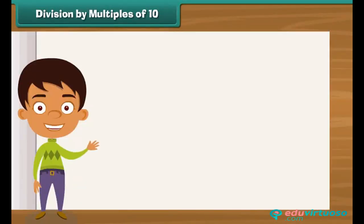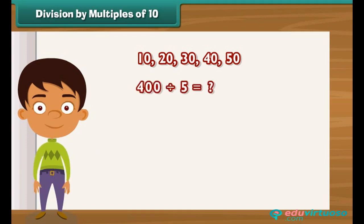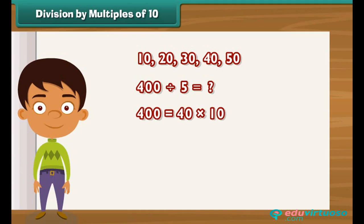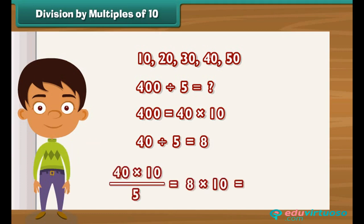Division by multiples of 10. The numbers that end with zero, such as 10, 20, 30, 40, 50, etc., are multiples of 10. Let us divide 400 by 5. 400 can also be written as 40 into 10. We know 40 divided by 5 is 8. So, 40 into 10 divided by 5 is 8 into 10, or 80.